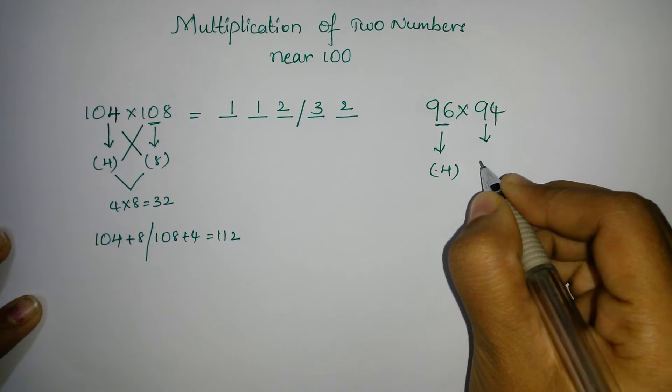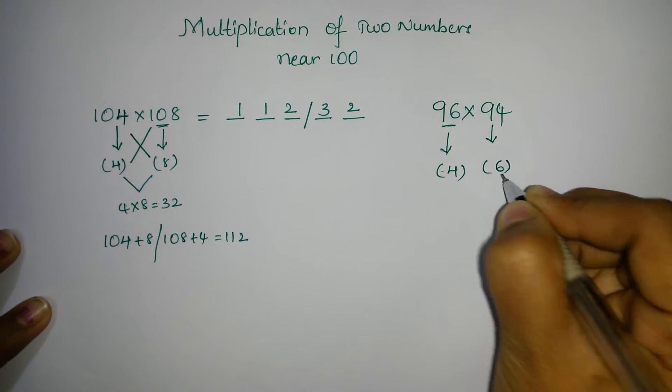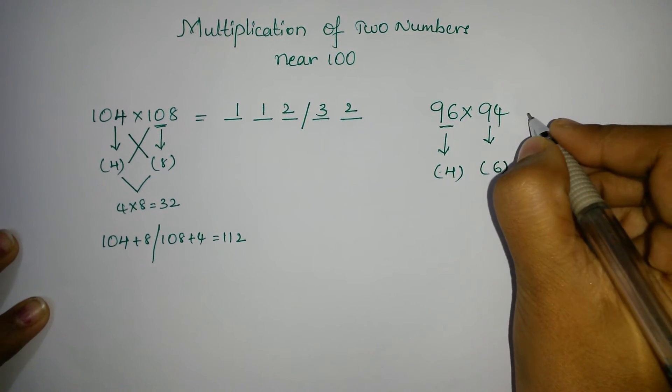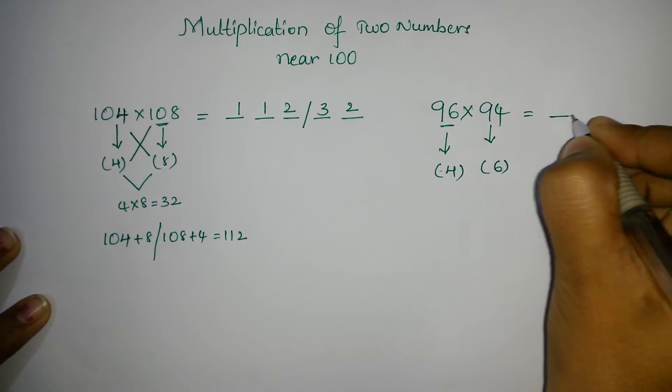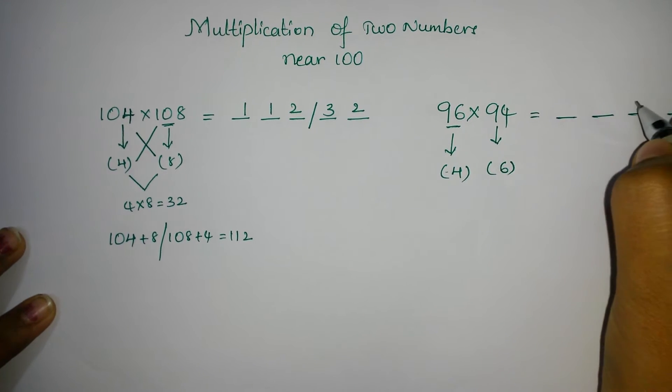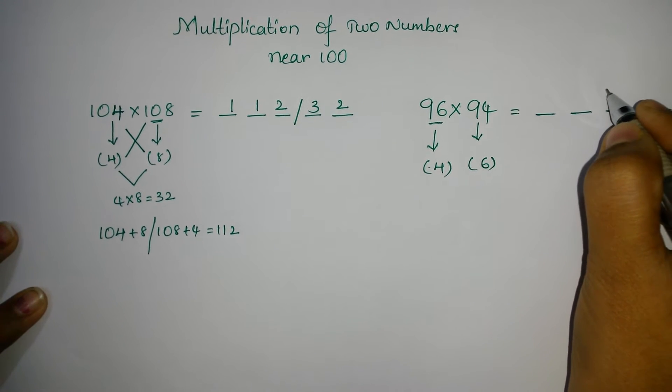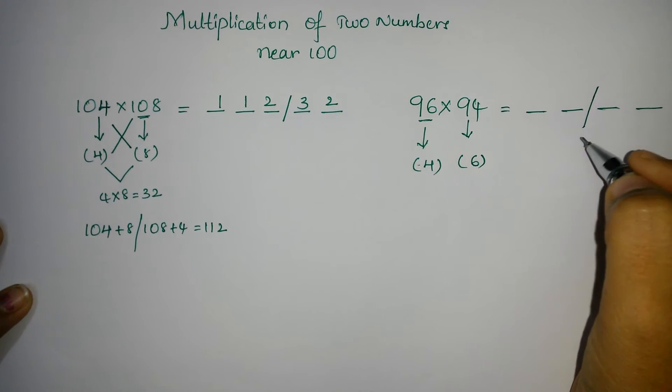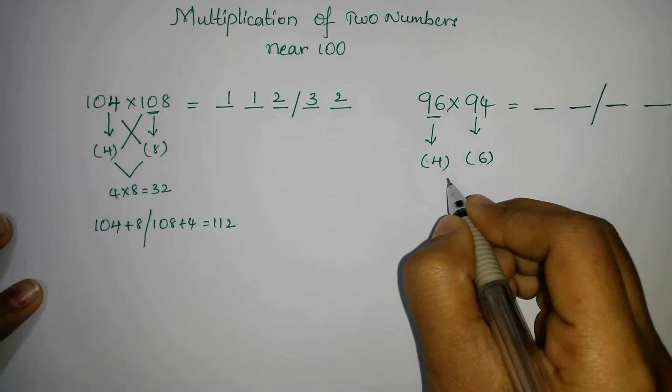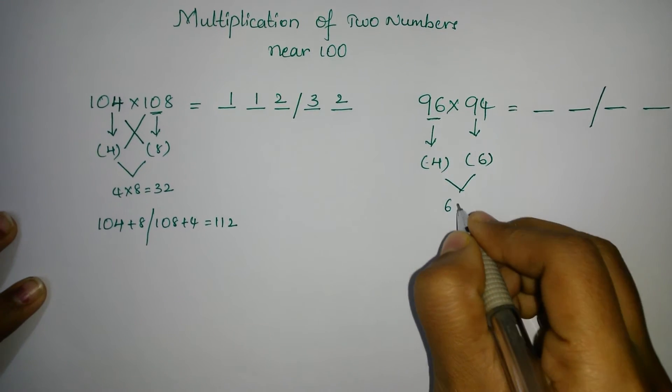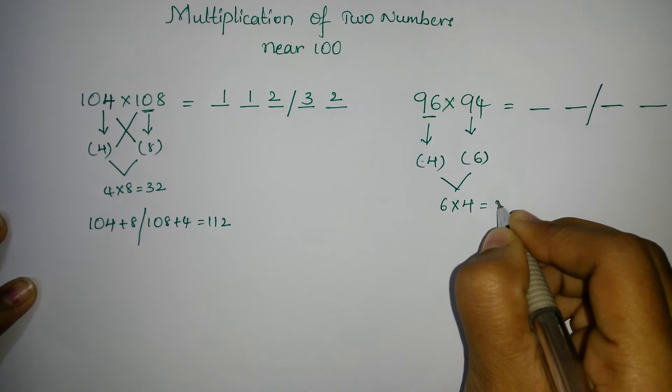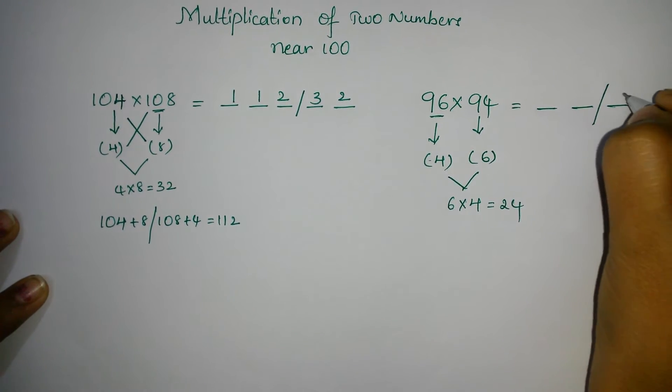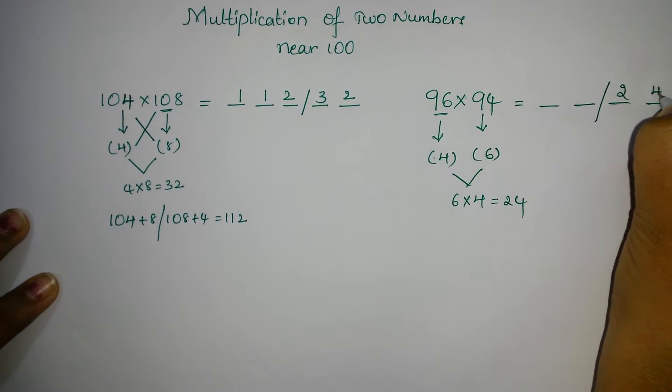And here 94. This is 6 less than 100. So the answer will be in 4 digits. So you have to separate these 2. Now, 6 into 4. 6 into 4 is equals to 24. So write the answer 24 in the right part.